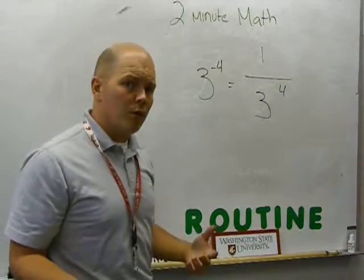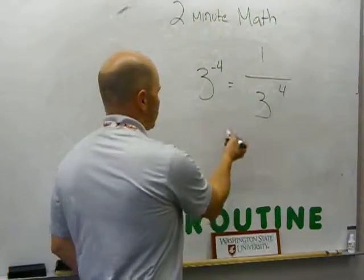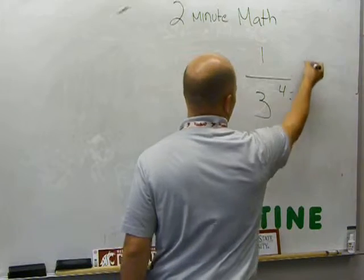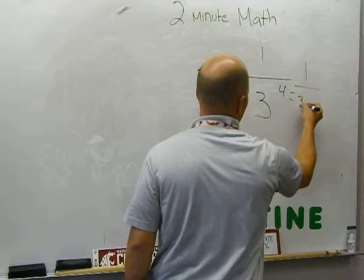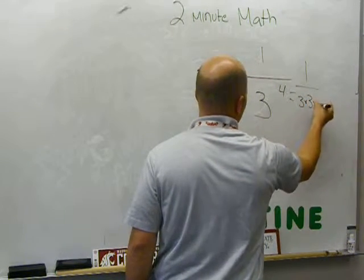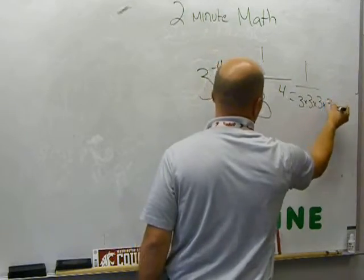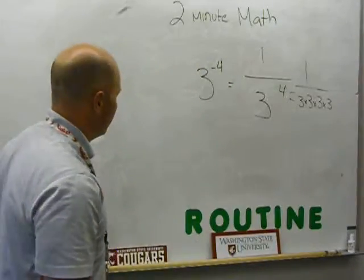And we explored it a little bit more by writing that in multiplication form, where we could say this is also equal to 1 over 3 times 3 times 3 times 3. And that's how we solved that problem.